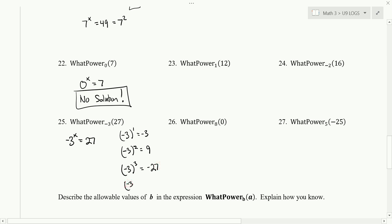Negative 3 to the power of 4, we get positive 81. And we see that we get close. We get negative 27, not positive 27. So this is not going to work out for us. So again, we've got no solution.